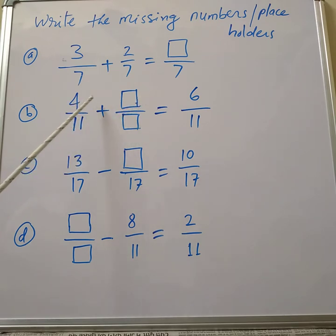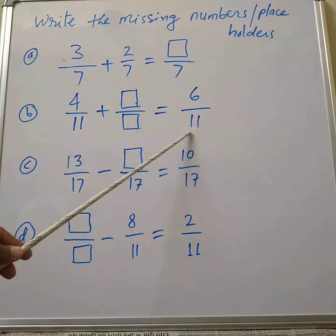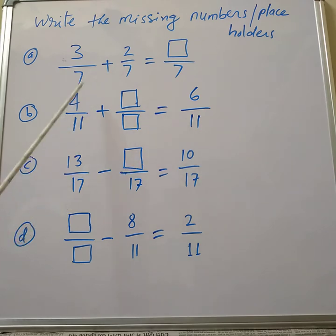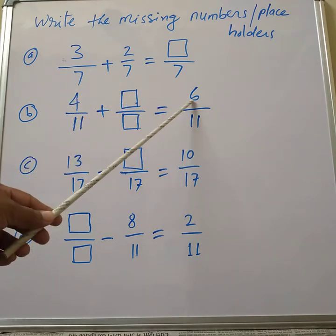Now, which number do we have to add to 4 to get 6? Correct, you are correct. We have to add 2 to 4 to get 6. So in this missing place we get 2 by 11. So 4 by 11 plus 2 by 11 equals, denominator is the same, so here we write denominator 11 and 4 plus 2 equals 6.